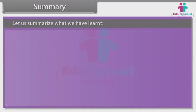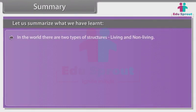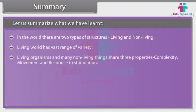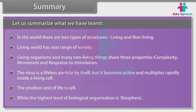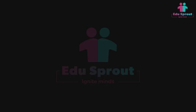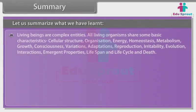Let us summarize what we have learned. In the world, there are two types of structures: living and non-living. Living world has vast range of variety. Living organisms and many non-living things share three properties: complexity, movement and response to stimulation. The virus is a lifeless particle by itself but it becomes active and multiplies rapidly inside a living cell. The smallest unit of life is cell, while the highest level of biological organization is biosphere.